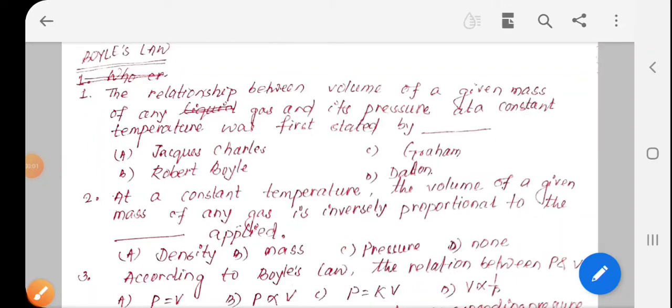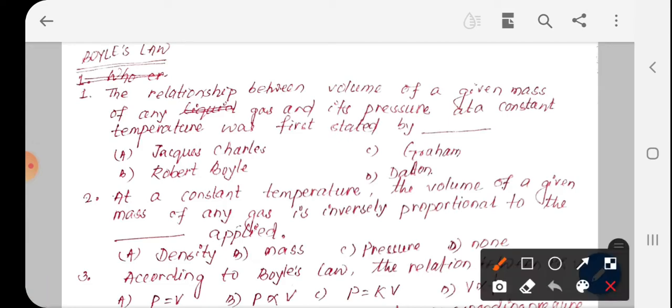Hello friends. The relationship between volume of a given mass of any gas and its pressure at constant temperature. At constant temperature, this is the key condition.